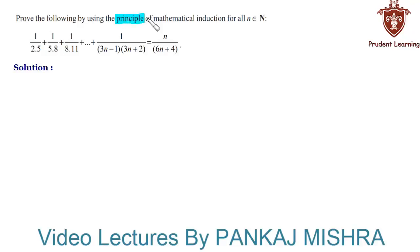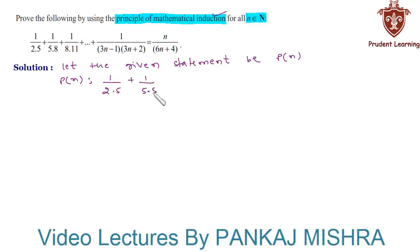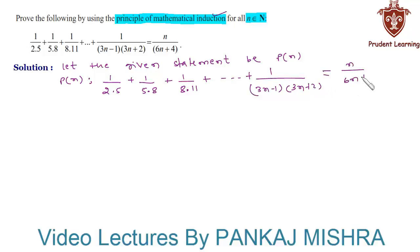Prove the following by using the principle of mathematical induction for all n belonging to natural numbers. Let the given statement be P(n), such that 1/(2×5) + 1/(5×8) + 1/(8×11) + ... + 1/((3n−1)(3n+2)) = n/(6n+4).